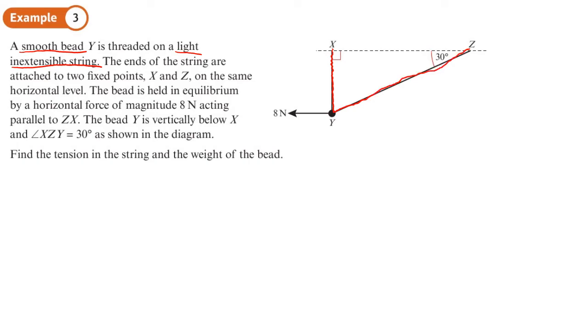Like that, so that red thing is the string, which has tension, which we're pointing there and there, always points away from where the mass is connected to it. The bead will have its own mass. We don't know what it is, but its weight will be mg. And we have this force of 8 newtons pointing to the left. Now it says it's held in equilibrium.